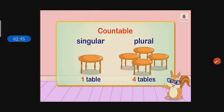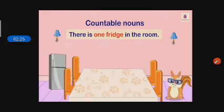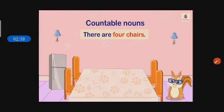One table — in singular form, one table. But in countable plural form: one, two, three, four — four tables. There is one fridge in the room. You can see how many fridges are in the room — there is only one fridge, so you can count it. There are four chairs: one, two, three, and four — four chairs in the room.